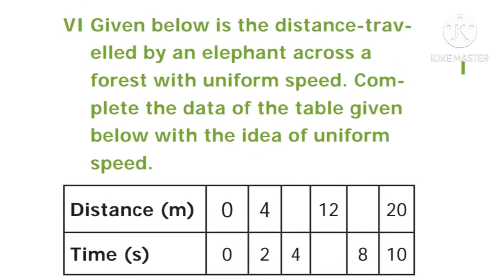Given below is the distance traveled by an elephant across the forest with uniform speed. Complete the data of the table given below using the idea of uniform speed. Distance in meters: 0, 4, dash, 12, dash, 20. Time in seconds: 0, 2, 4, dash, 8, 10.